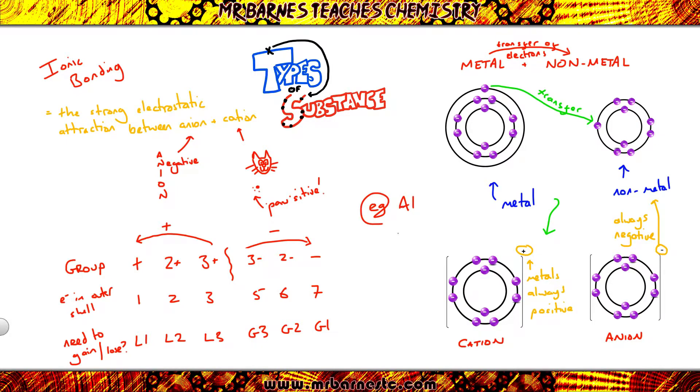So for example, aluminium is in group three, it loses three negative electrons and becomes Al three plus. Sulfur is in group six, gains two negative electrons and becomes S two minus.